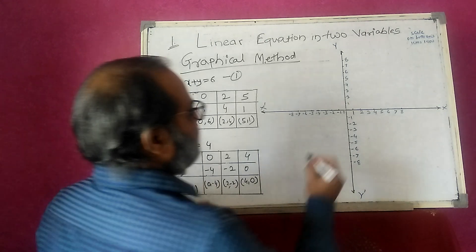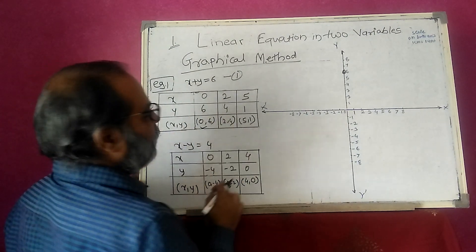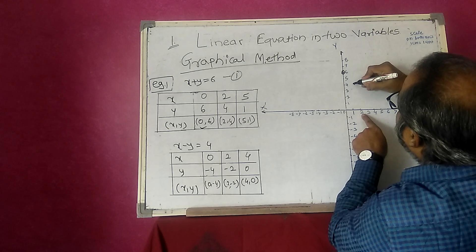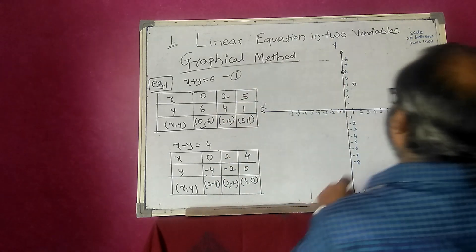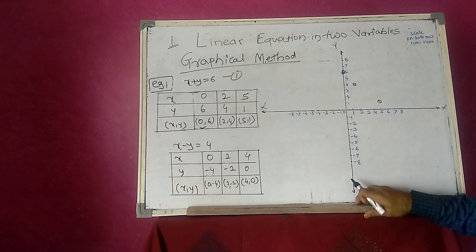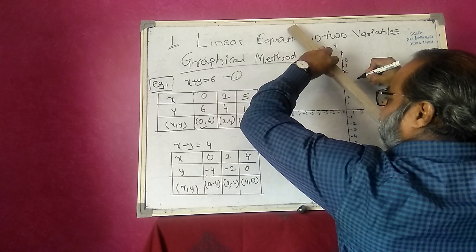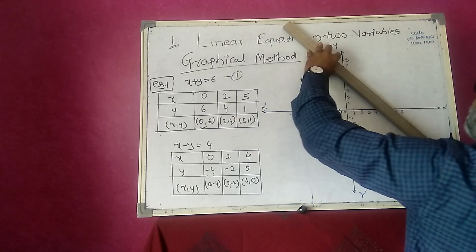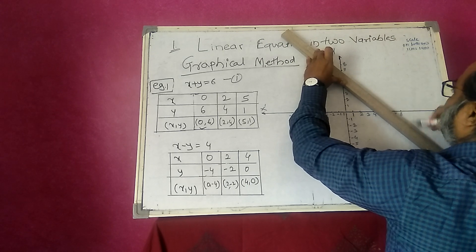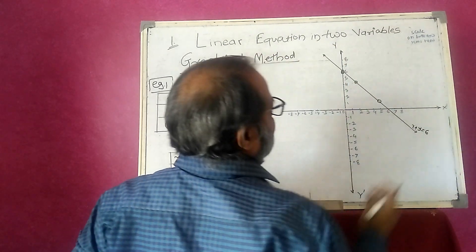My first point is (0, 6) — I plot it with a small circle. The second point is (2, 4): x equals 2, y equals 4 — I plot it. The third point is (5, 1): x equals 5, y equals 1 — I plot it. I draw a line passing through all three points. The name of this line is x plus y is equal to 6.